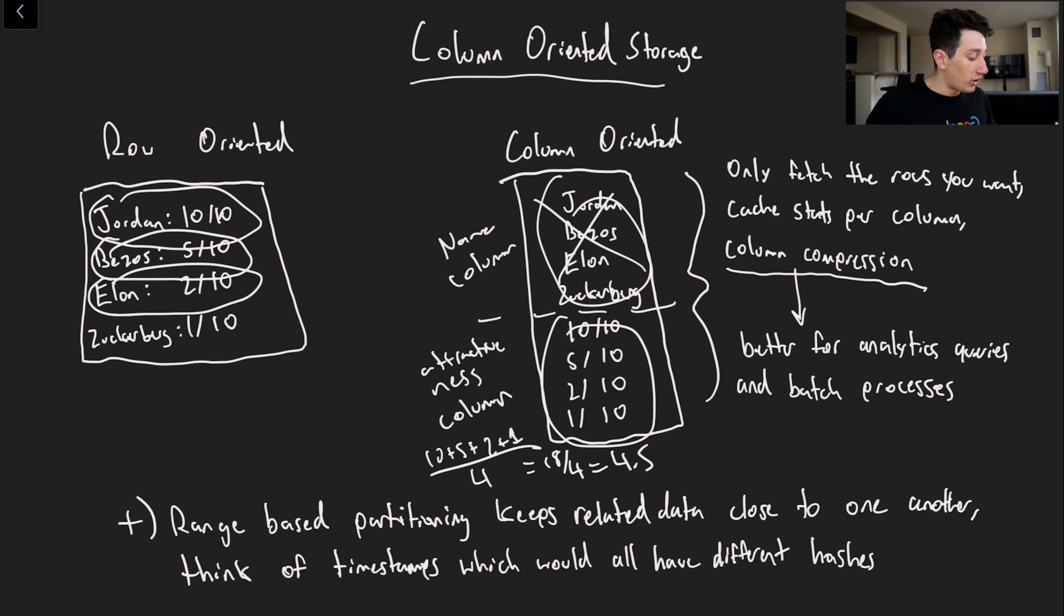So just in general the kind of gist of column oriented storage is this right here, which is that it is better for analytics queries because we have better data locality. And in addition to that, that makes it better for batch processes as well, because it means that all of the data that we want is closer to one another on disk.